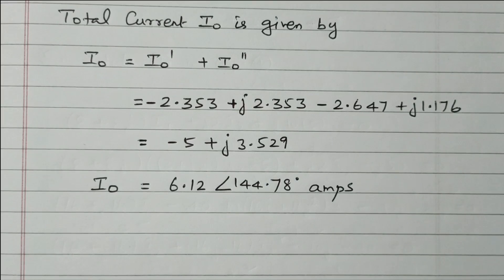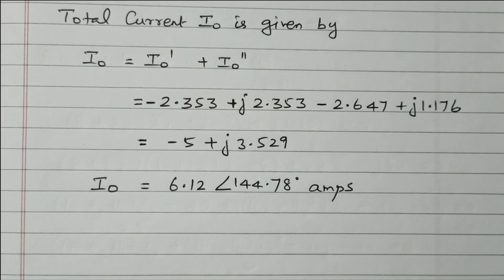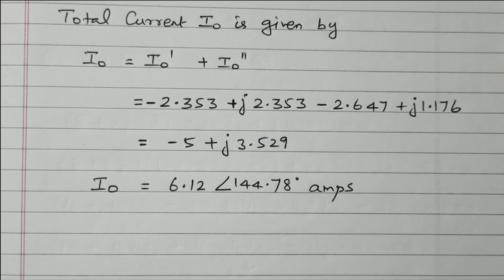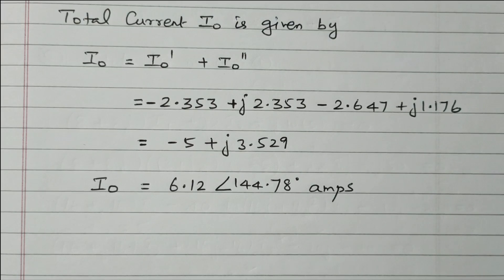In summary, we solved the problem using the superposition theorem to find I₀ in a circuit with one voltage source and one current source. In step 1 we considered only the voltage source and found I₀ dash. In step 2 we considered only the current source and found I₀ double dash. Adding both gives the final answer. Subscribe to this channel for more videos and notifications.